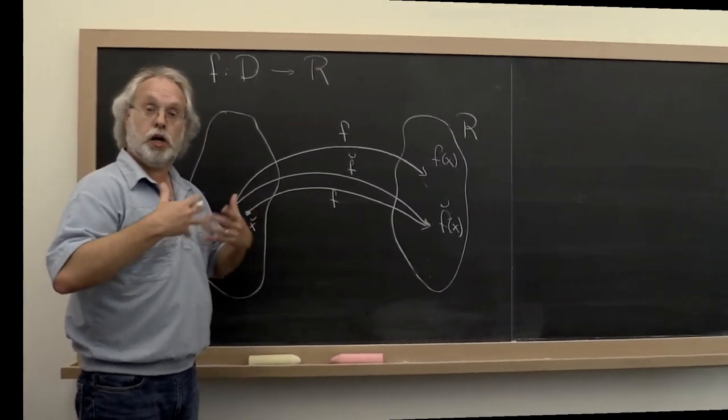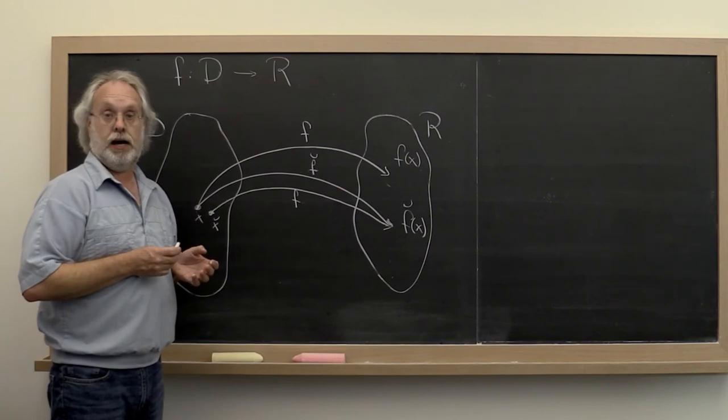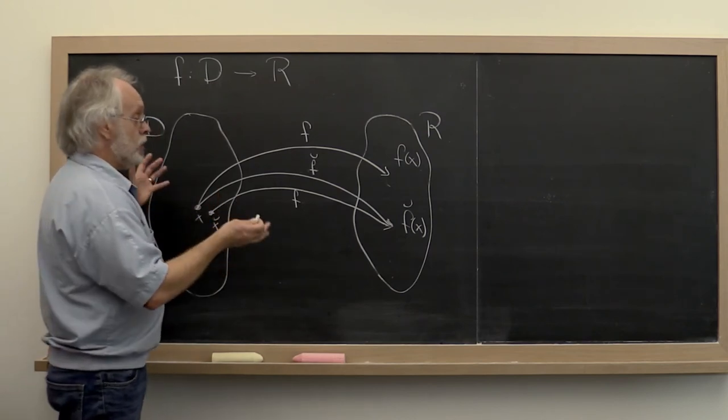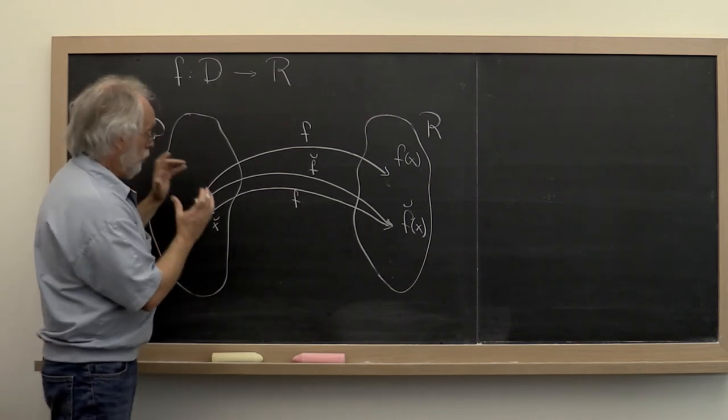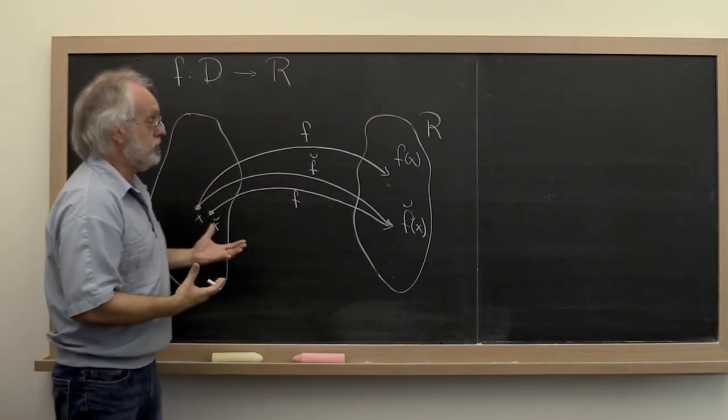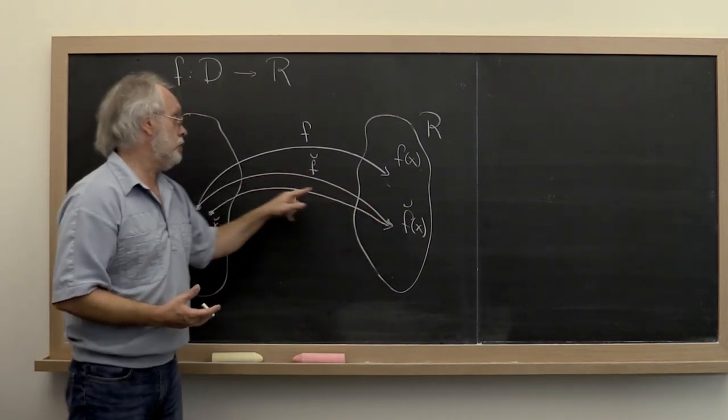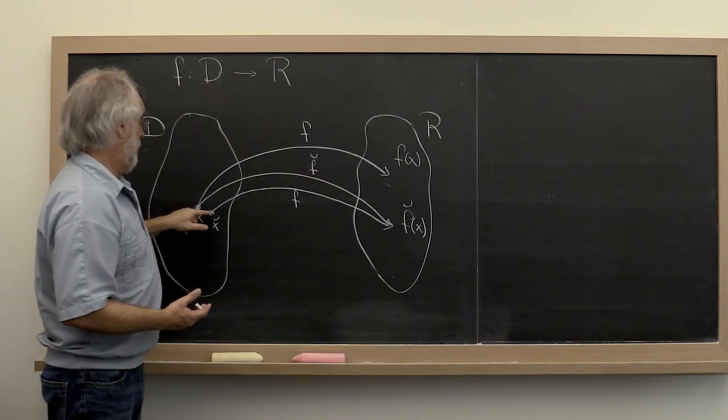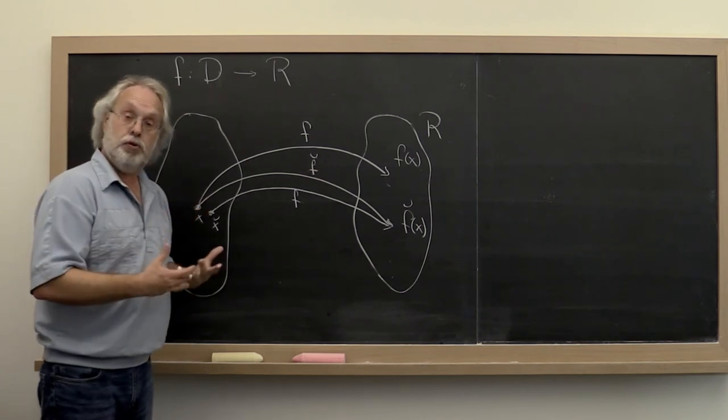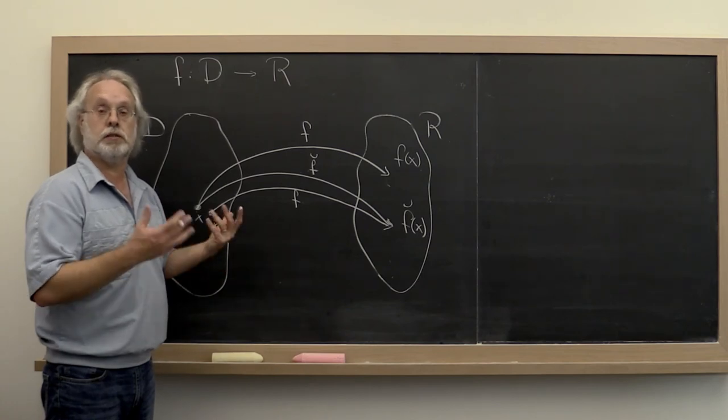And what we're going to do now is we're going to look at various operations that we have encountered in linear algebra and analyze whether we can prove that the algorithm has the property that any computed value can be attributed to an input that's close to the original input. And that's called backward error analysis.